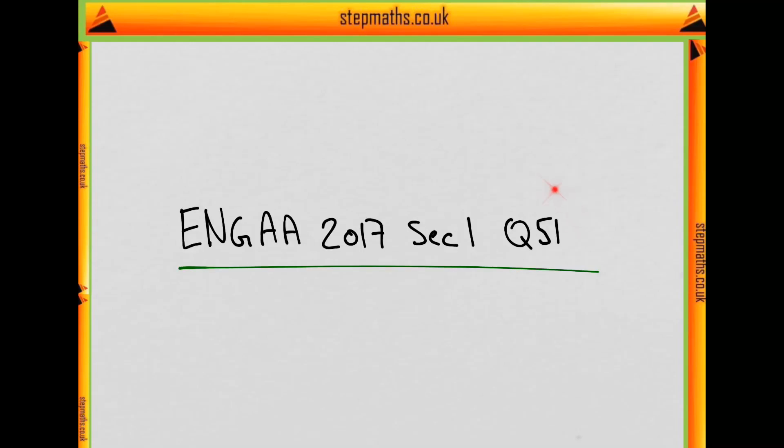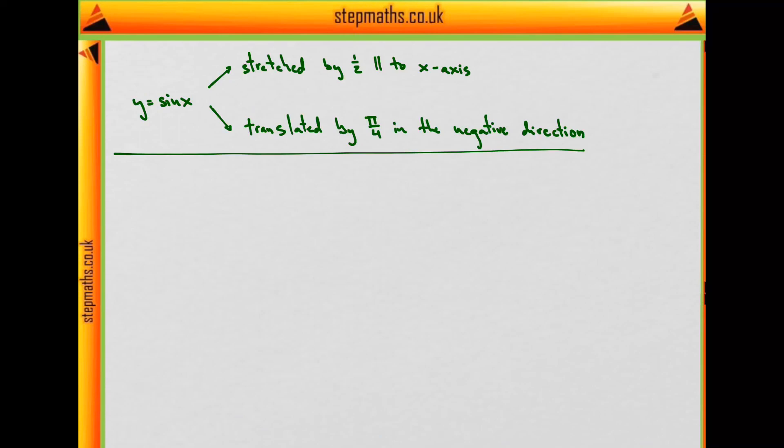In this video, we'll look at question 51 from the 2017 exam. In this question, we have a function y equals sine of x. This is subject to two transformations.